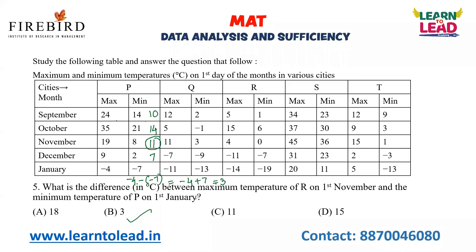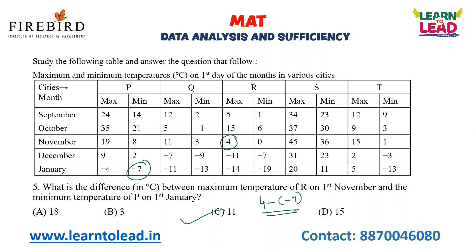What is the difference between the maximum temperature of R on 1st November and the minimum temperature of P on 1st January? Maximum temperature of R on 1st November is 4, and minimum temperature of P on 1st January is minus 7. So 4 minus of minus 7 equals 11. Option C is your answer.